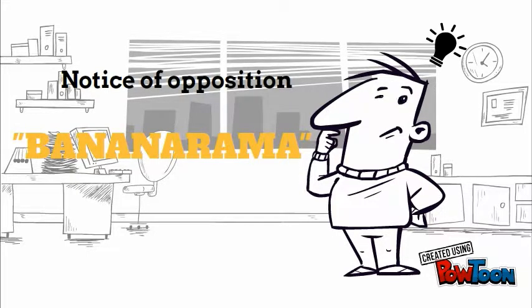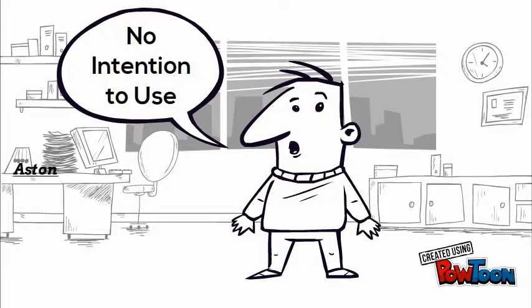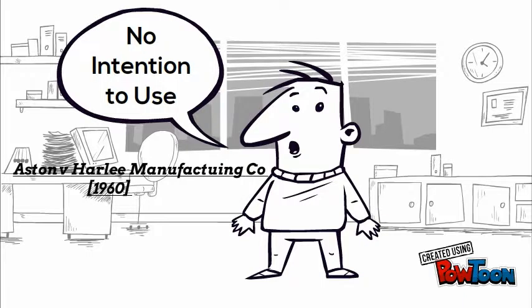Jack decides to lodge a notice of opposition on the grounds that Billy does not intend to use the trademark. However, this will be difficult to prove as there is a presumption that Billy intends to use the trademark because he has registered it. Therefore, the onus will rely on Jack to disprove the presumption and establish that Billy never intended to use the trademark. In the case of Aston and Harley Manufacturing Co., it was held that in order to satisfy the element of intent, the applicant does not need to have an intention to use it in the immediate future for intent to be established.